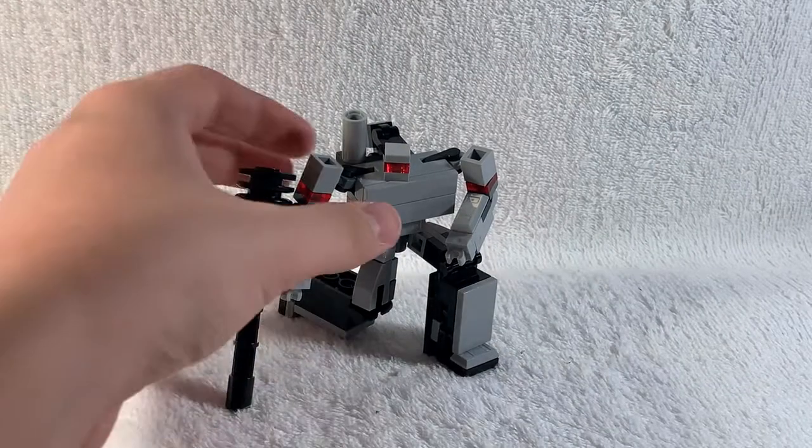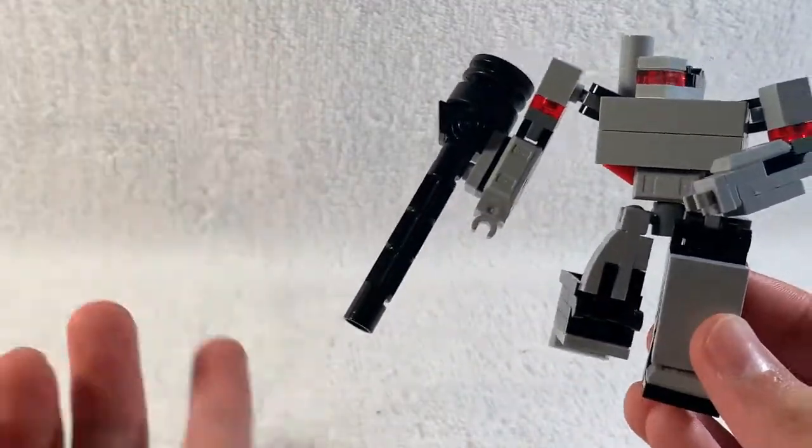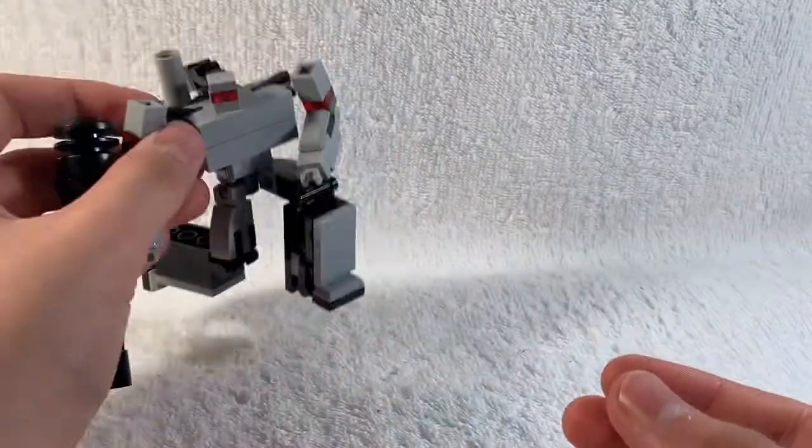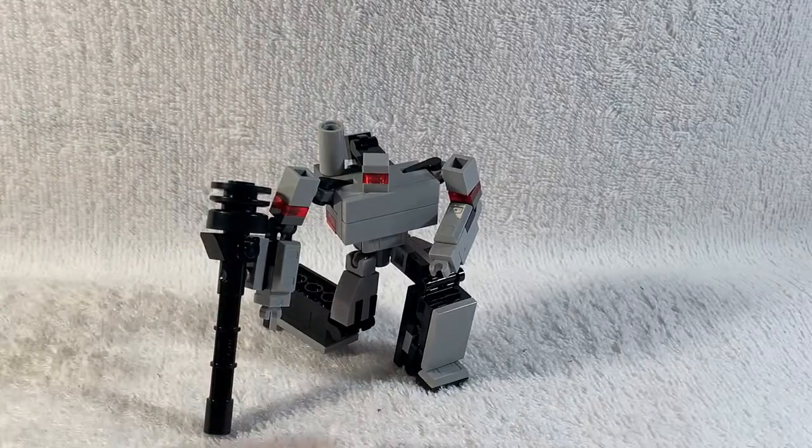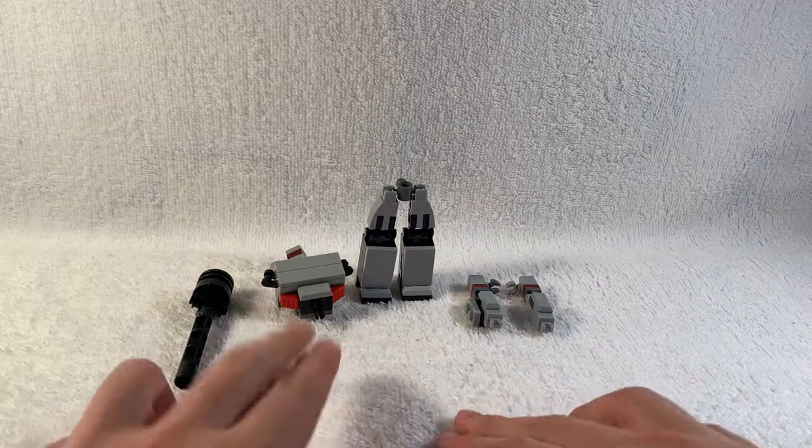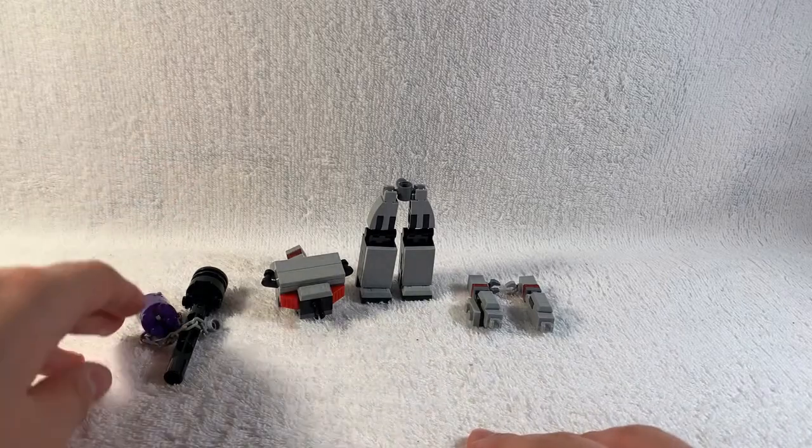So we'll be building Megatron himself, Fusion Cannon and everything, and his Energon Mace, which is actually very simple. So let's get into building Megatron. We will be building Megatron in four separate parts: the arms, the legs, the torso, and his Fusion Cannon slash accessories with the Mace as well.